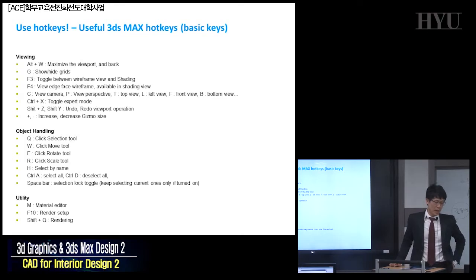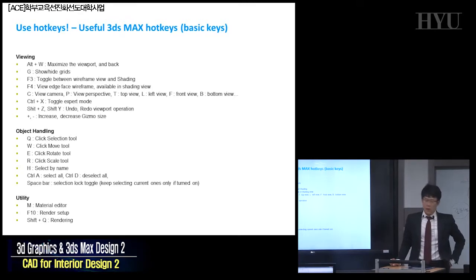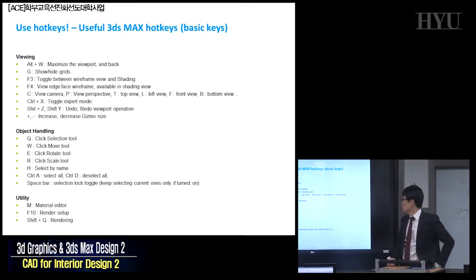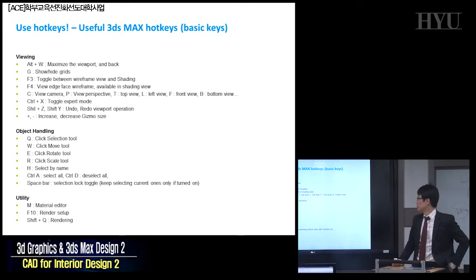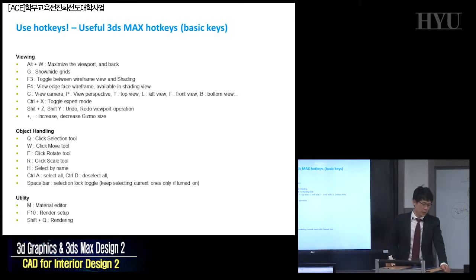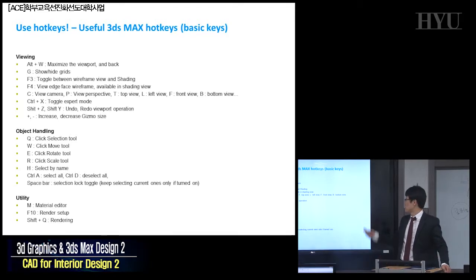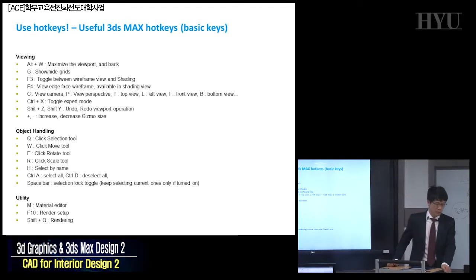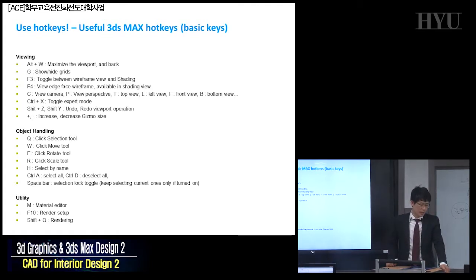Here are some hotkeys in 3D Studio Max, such as R2W, G, and F34, C, P, T, L, F for controlling your viewport. Especially the object handling shortcuts — hotkeys Q, W, E, R, H, Ctrl-A, Ctrl-D, spacebar. They are very, very frequently used hotkeys.